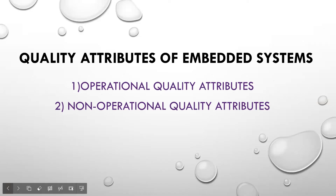Hello all. In today's class we are going to see the quality attributes of embedded systems. So what is the meaning of quality attributes? These are the characteristics which determine the quality of your embedded system. This is broadly classified into two types: one is operational quality attributes and the second one is non-operational quality attributes.